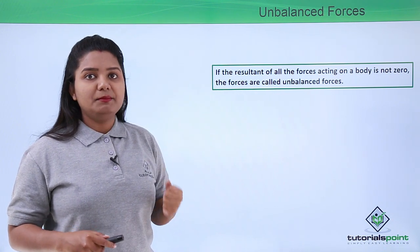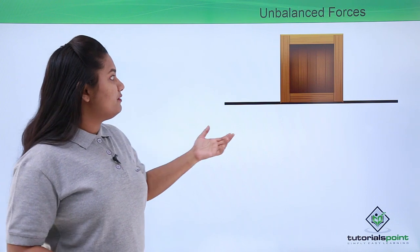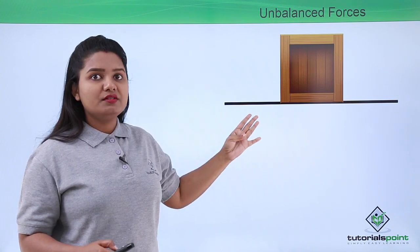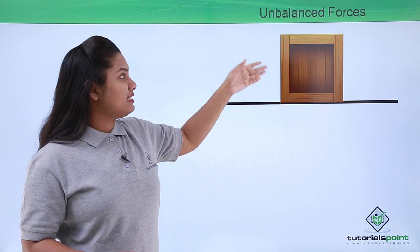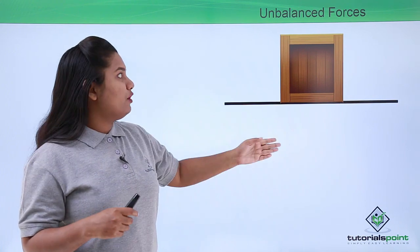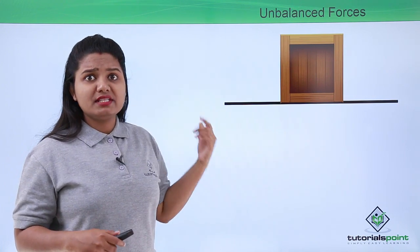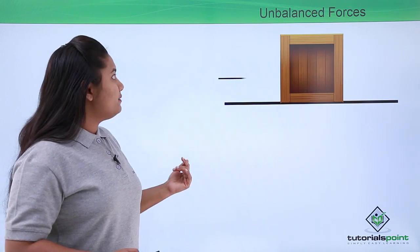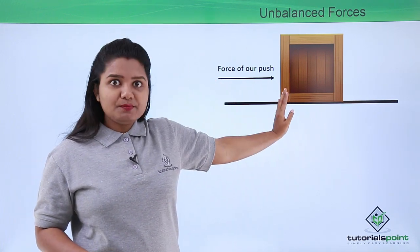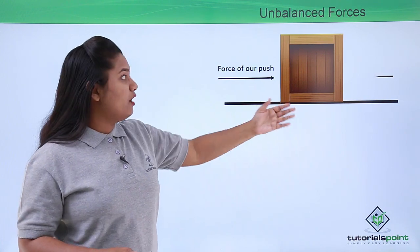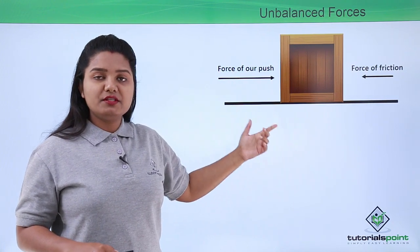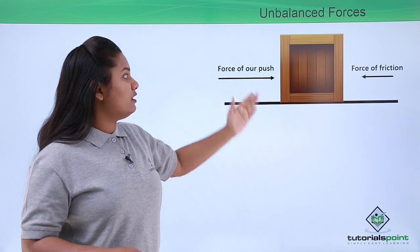Now let us look at some examples of unbalanced forces. Consider a wooden box lying on the ground. There are four forces acting on it: the force of gravity, the force of reaction — which cancel out exactly — and then the forces we will examine. When we push this box, the force of friction comes into play in the opposite direction to the force of our push.